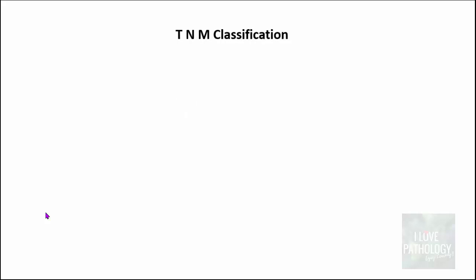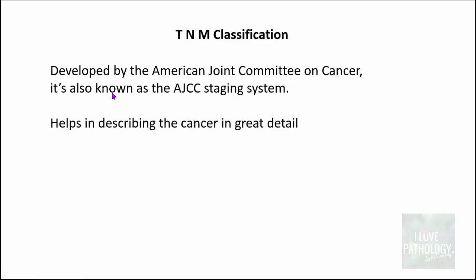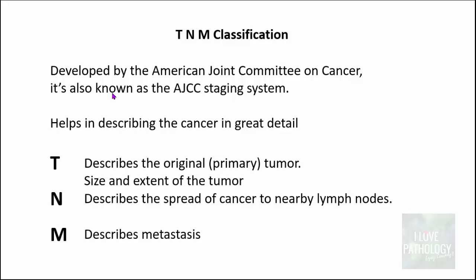The TNM classification was developed by the American Joint Committee on Cancer, also known as the AJCC staging system, which helps describe cancer in great detail. T stands for Tumor — it describes the size and extent of the original or primary tumor. N stands for Nodes — it describes the spread of cancer to nearby lymph nodes. M stands for Metastasis — it describes spread into distant organs or distant sites.